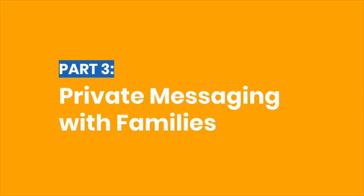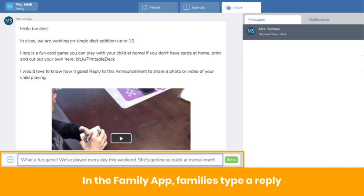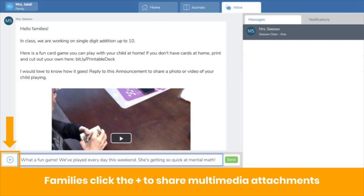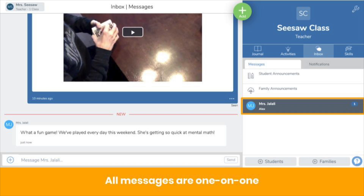You can also send private messages to family members. After you send your first announcement to families, they can reply with a private message. Note that families cannot send you a private message until you send that first announcement. Here we are back in the Family view. Families can type a private message or click the plus button to add a multimedia attachment, like a video of their child playing a math game or a photo of an important milestone. Note that when a family member replies to the announcement, the reply goes only to the teacher. Families cannot message each other in Seesaw. All messages are one-on-one; group messaging is not supported at this time.